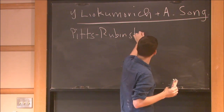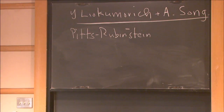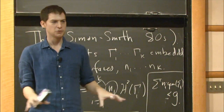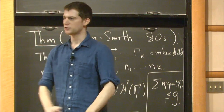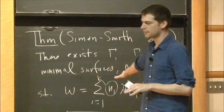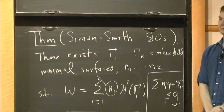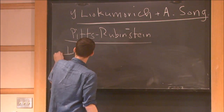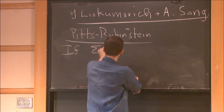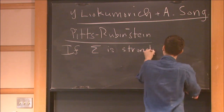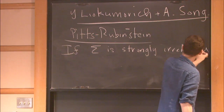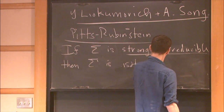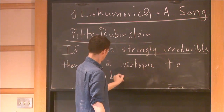The fact that the limit can contain multiple components with multiplicities means you're not isotopic to what you started with. The question is: is there some condition on the manifold so that when you do this procedure you don't degenerate into things of smaller genus, multiple components with multiplicities — all the bad things that can happen? They conjectured that if the Heegaard surface is strongly irreducible, then σ is isotopic to an index-one minimal surface, modulo one exceptional case.